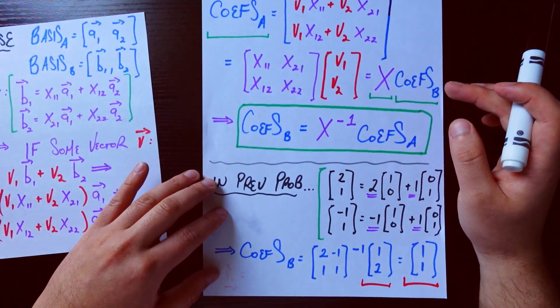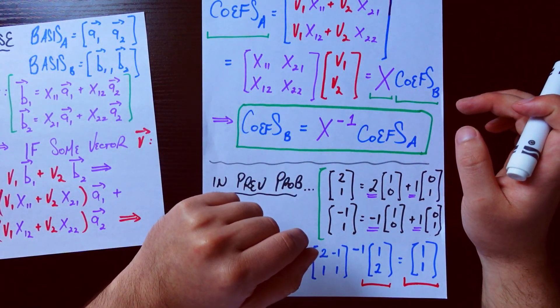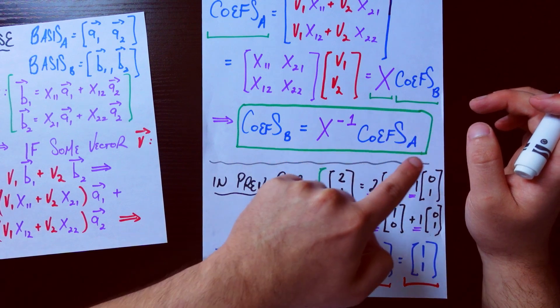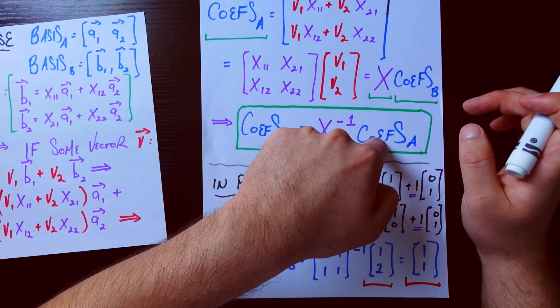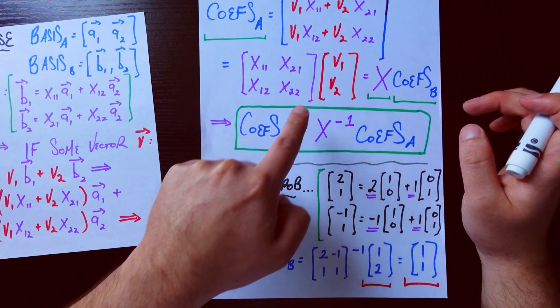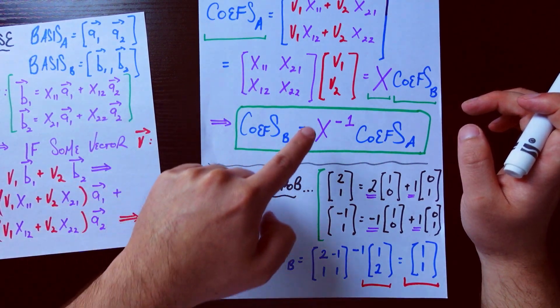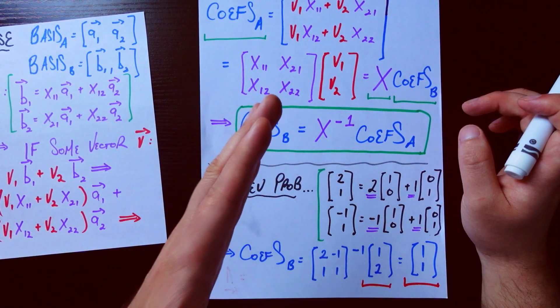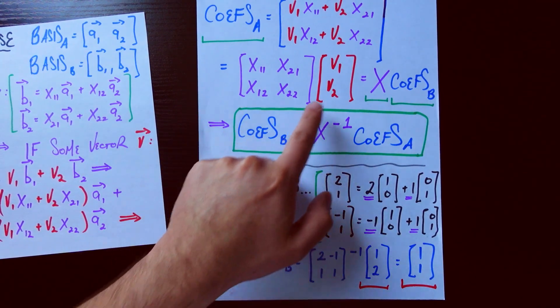The whole punchline here, if I take this matrix X and I invert it and I slap it on the left side here, is that if I have the coefficients of any vector v in some basis A, then all I need to do is multiply it by this matrix inverse, and that will give me the coefficients of that vector v in this completely new basis B. And now let me show you really quick why it's important.